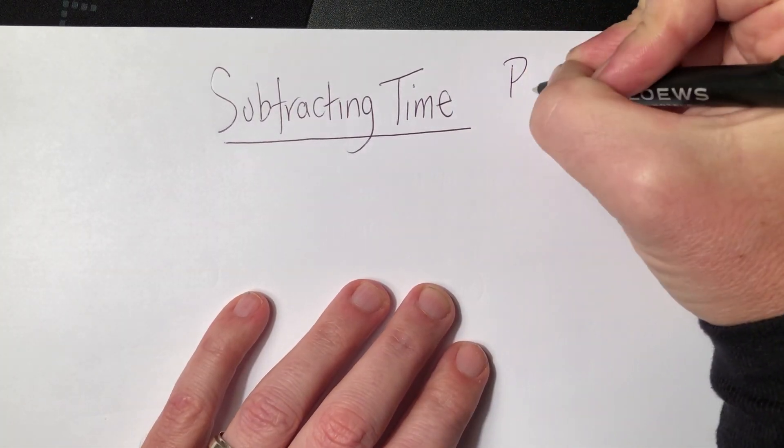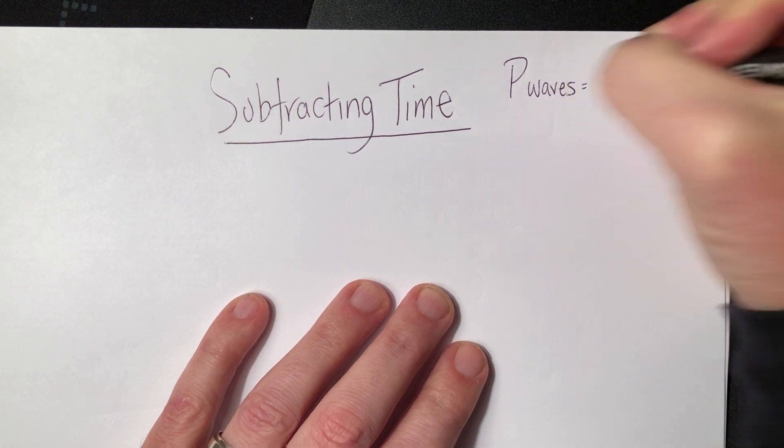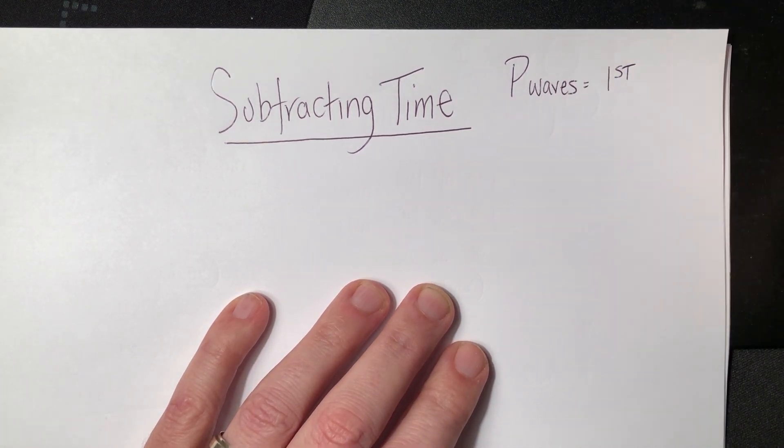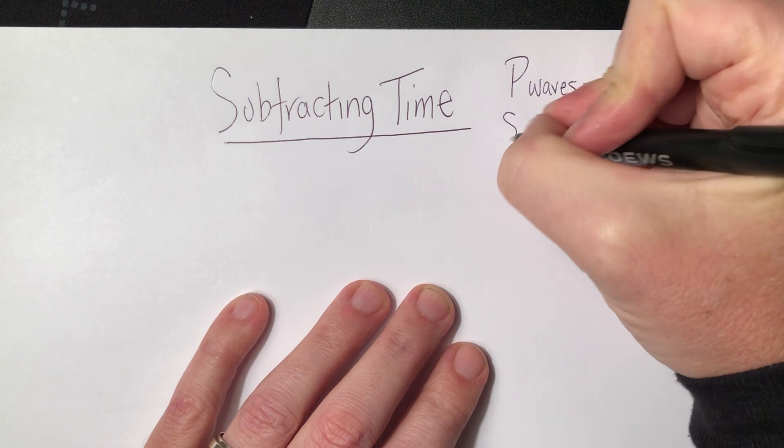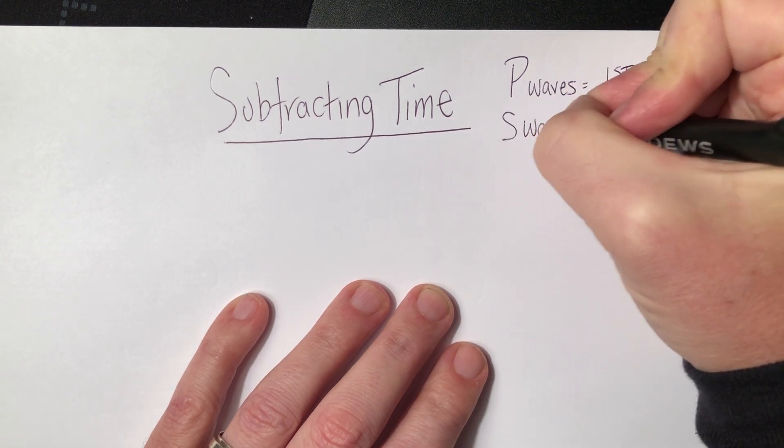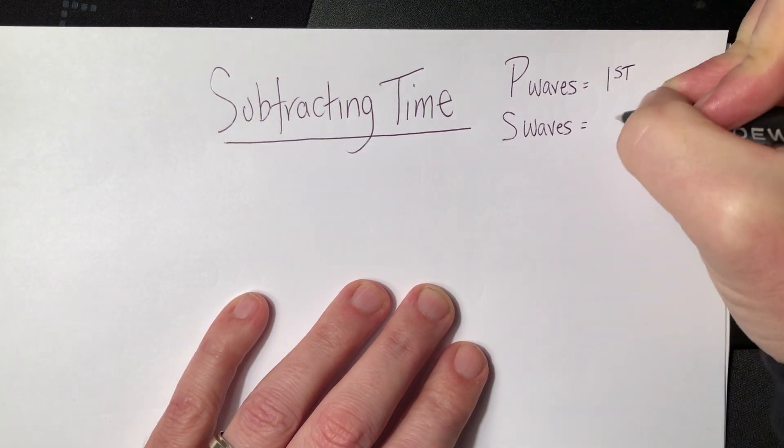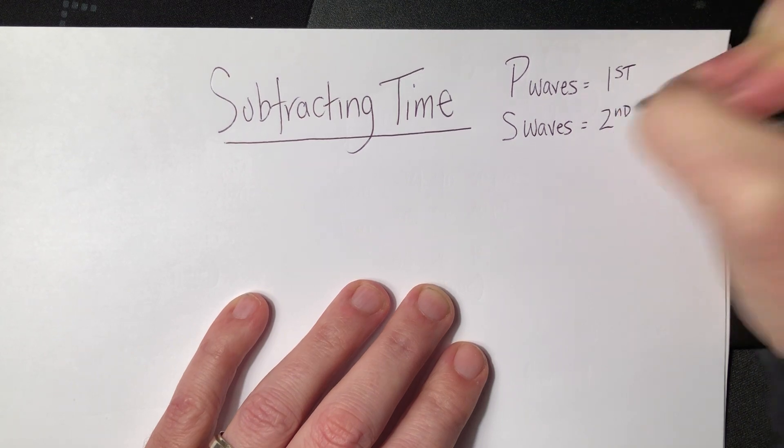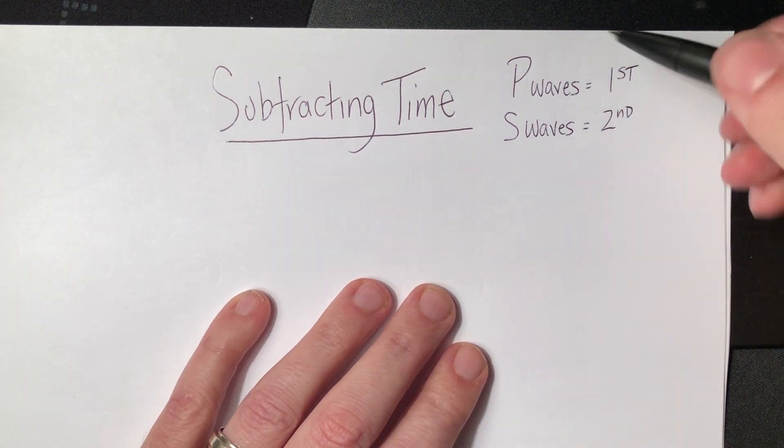So you have P waves. They're always first, which means that they're faster. And you have the secondary waves, the S waves. They're always going to come in second, which means that they're going to be a little bit slower. That's how it's always going to be.